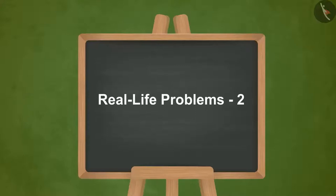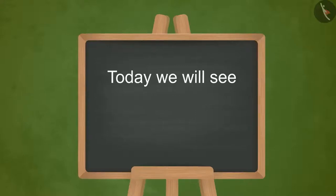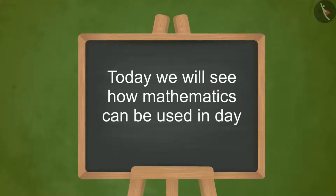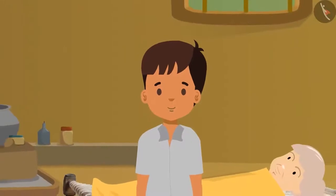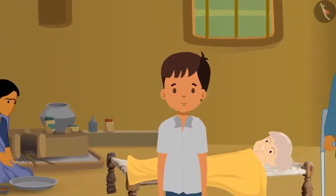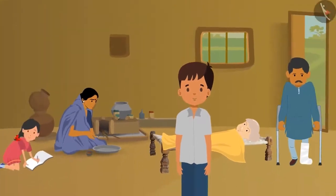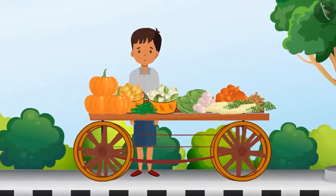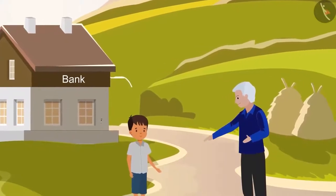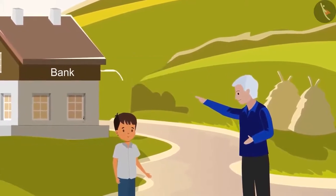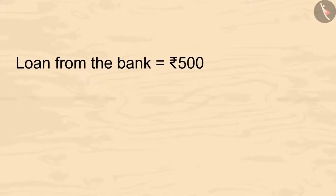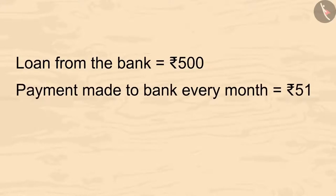Real life problems. Today we'll see how mathematics can be used in day-to-day activities. You already know this talented boy Vimal, and this is his family. Vimal runs a vegetable cart to earn for his family. He was suggested by his uncle to take a loan from the bank. Vimal had borrowed 500 rupees from the bank to set up the vegetable cart. As a result, he pays 51 rupees to the bank every month.